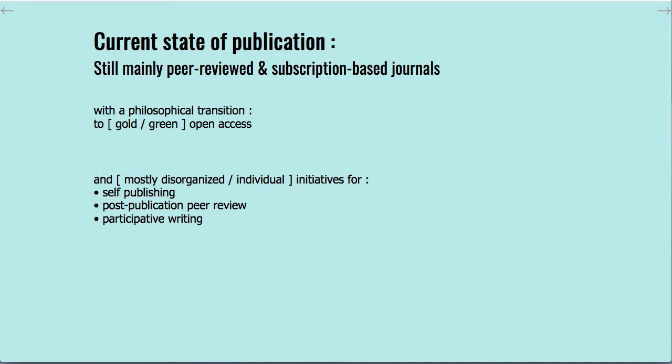So the current state of publication is that mainly we still have peer-reviewed and subscription-based journals. Even if there's of course a transition to gold or green open access. And there's also mostly disorganized or individual initiatives for self-publishing. Self-publishing is when you put your articles on arXiv. Post-publication peer review or participative writing.